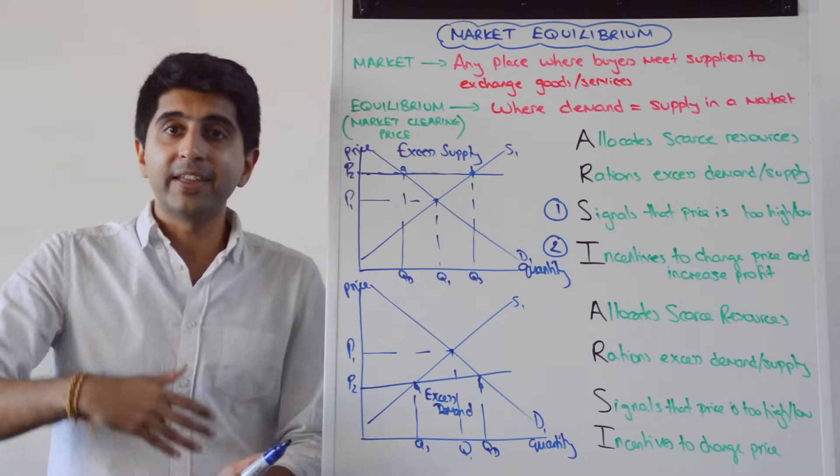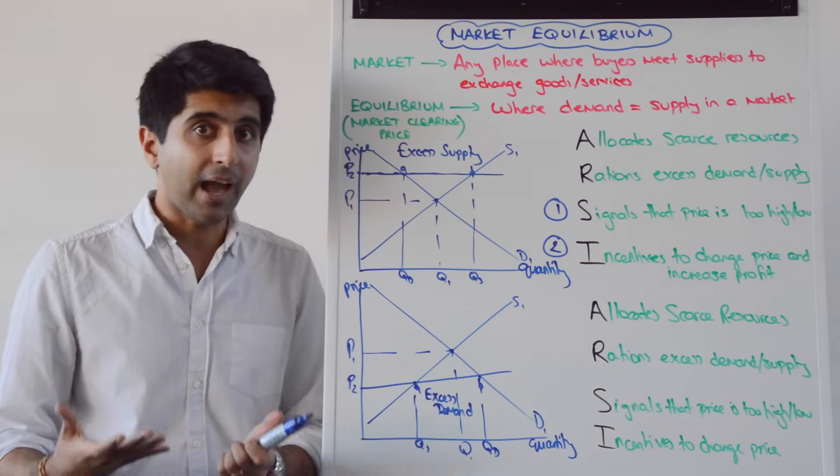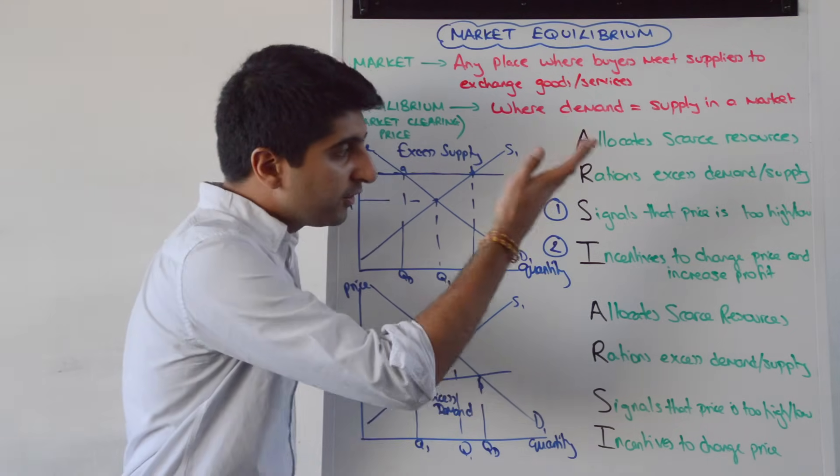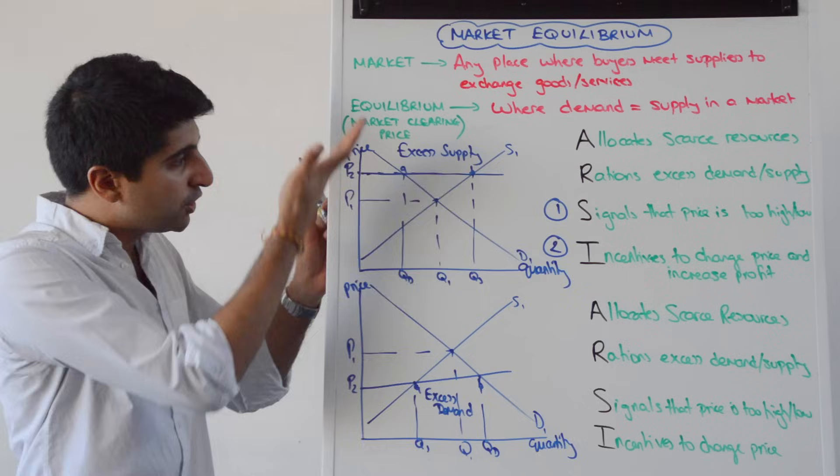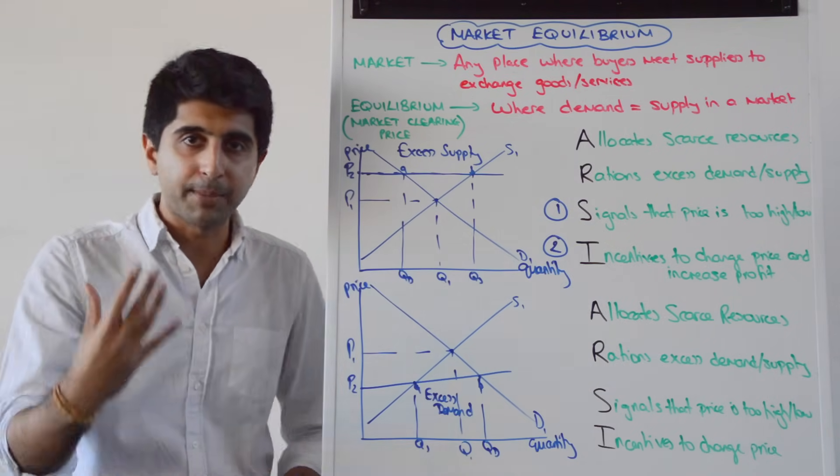So then the market provides an incentive to producers to change their price, in this case to reduce their price from P2 to P1. Why? If they reduce their price, they can sell a lot of that excess supply, that excess stock and make profit from it. So that's the profit motive to change price, in this case to reduce price from P2 to P1, sell some of the excess stock and make profit.